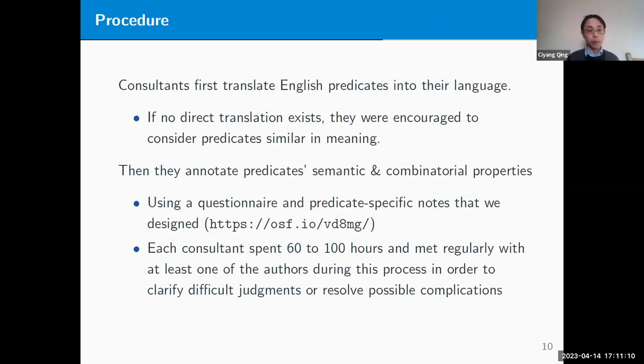In terms of the procedure: first the consultants translated English predicates into their own language. In cases where there were no direct translations, they were encouraged to consider predicates with similar meanings. After the list of predicates had been determined, they annotated the predicates' semantic and combinatorial properties using a questionnaire and practice-specific notes that we designed, which you can access from the following link.